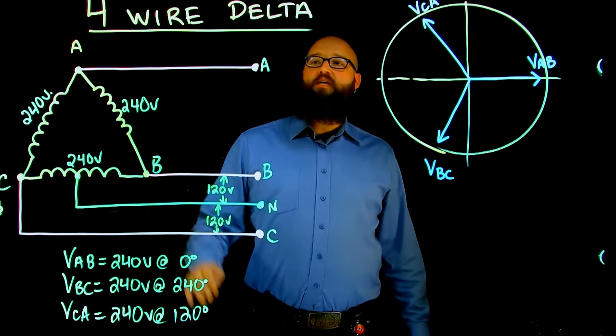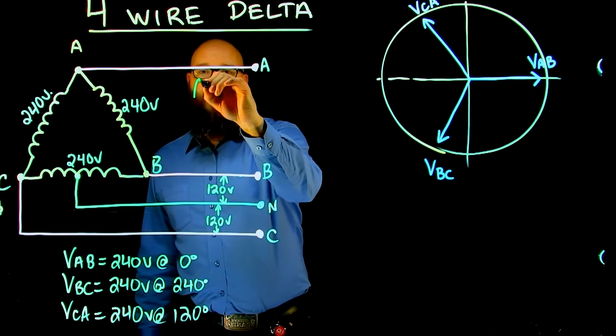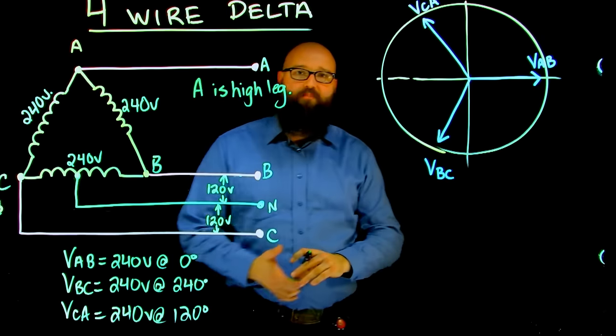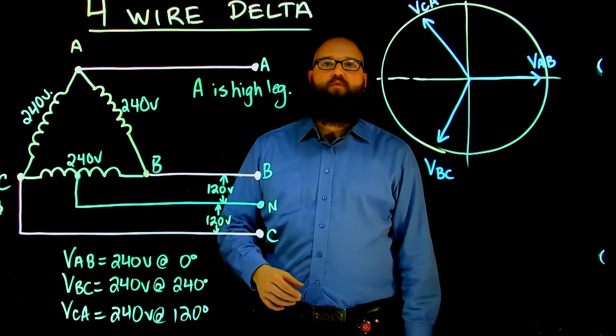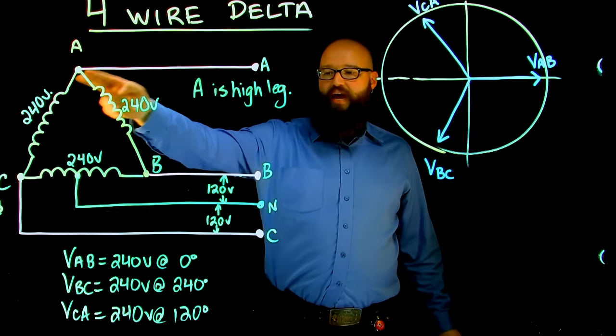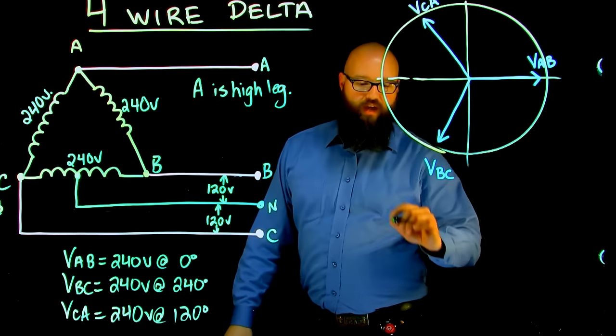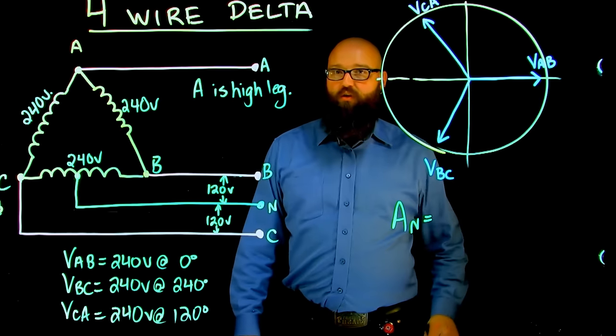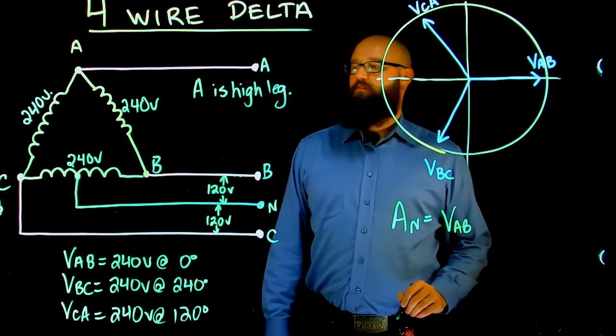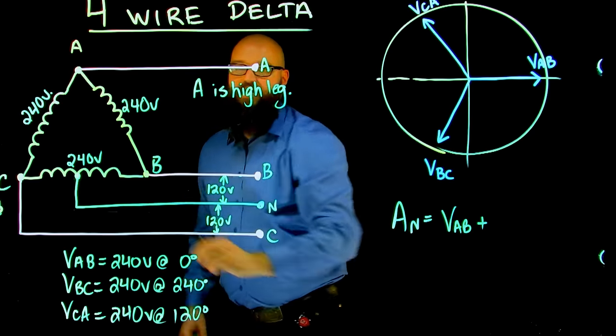Code requires, Canadian code requires, that our A leg be classified as our high leg. So our A is our high leg. And what that means is this, in this system we have this unique voltage that can be present if we're not careful. If I was to actually measure A to N, we can plot this out. We could say, well, we know that A to N vectorally is going to equal VA to B plus, if we continue this direction, VB to N.